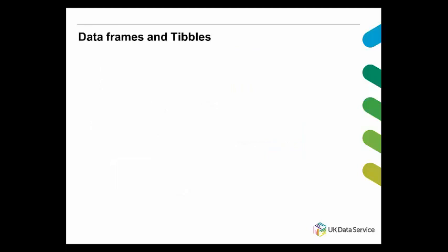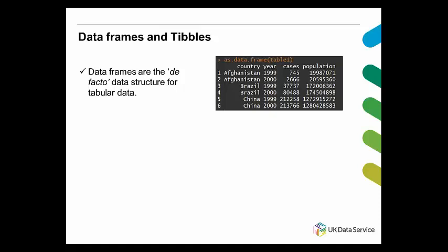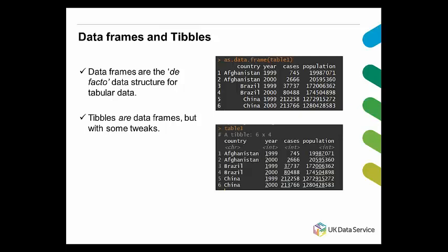Now we are moving on to data frames — the dataset proper. A data frame is a very important data type in R. To put it simply, it's just a series of rows and columns with headers indicating variable names and row numbers indicating case numbers. Tibbles, on the other hand, are also a structure for storing tabular data — they are basically data frames but with some tweaks. Tibbles are a bit more informative than data frames and immediately tell us the class of each variable, for instance whether the variable country is a character or the variable year is an integer.